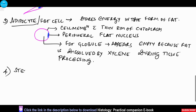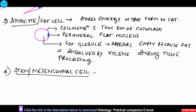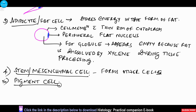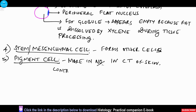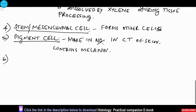Next is the stem cell or mesenchymal cell, which forms the other types of cells of the connective tissue. Then we have the pigment cell, which is present in large quantities in areas like the dermis of the skin, where it gives color to the skin and contains large amounts of melanin.